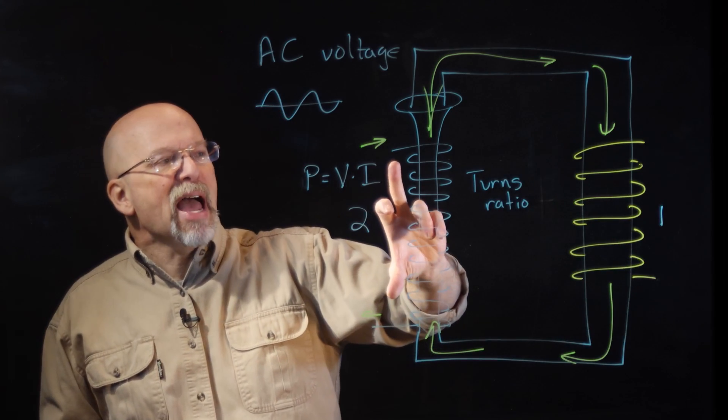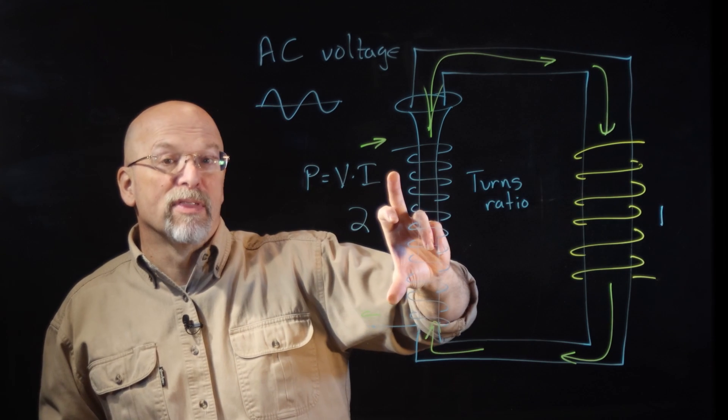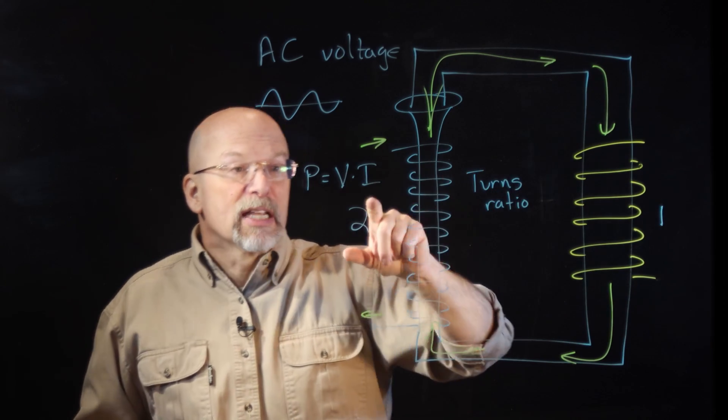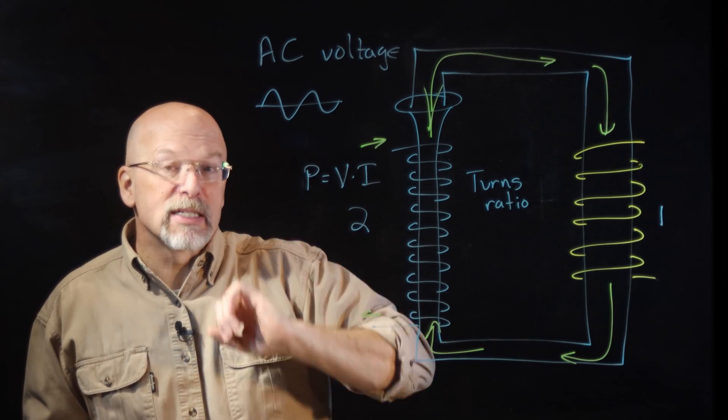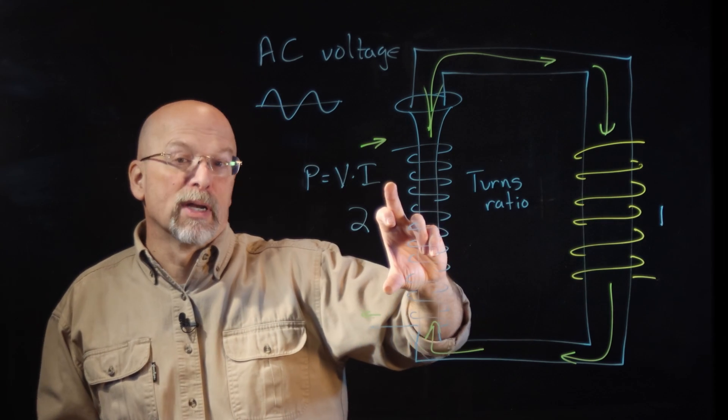So if I have half the voltage on this side than I have on this side, then my current, in order to make it so that the power stays the same, my current is going to be doubled on this side from what it is on this side.